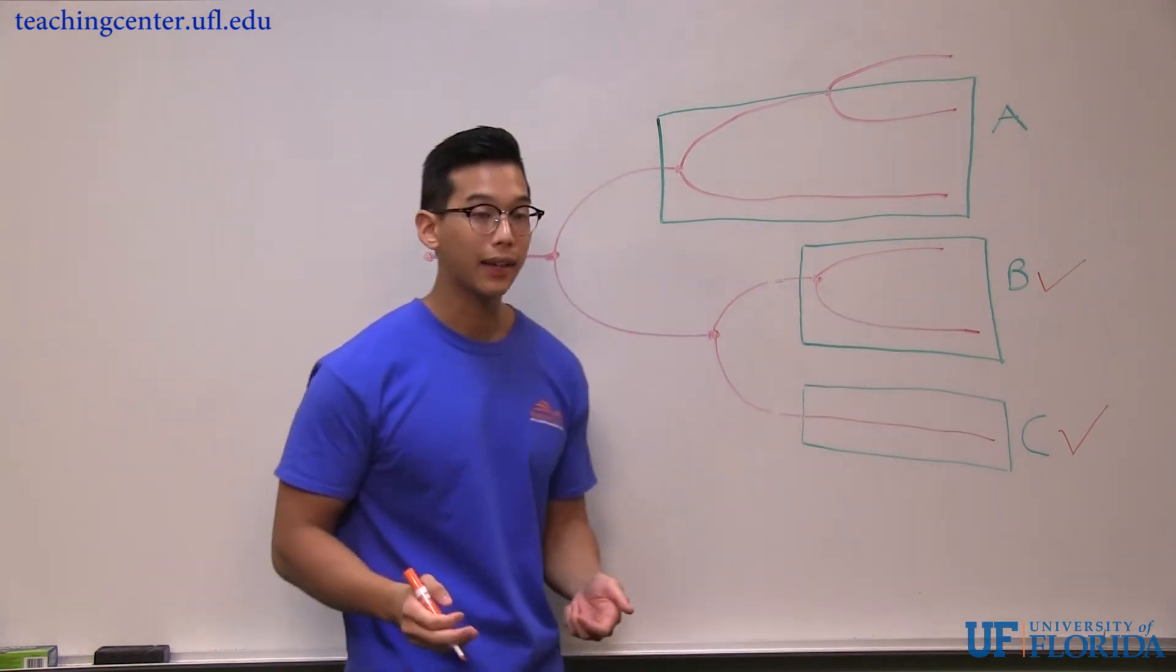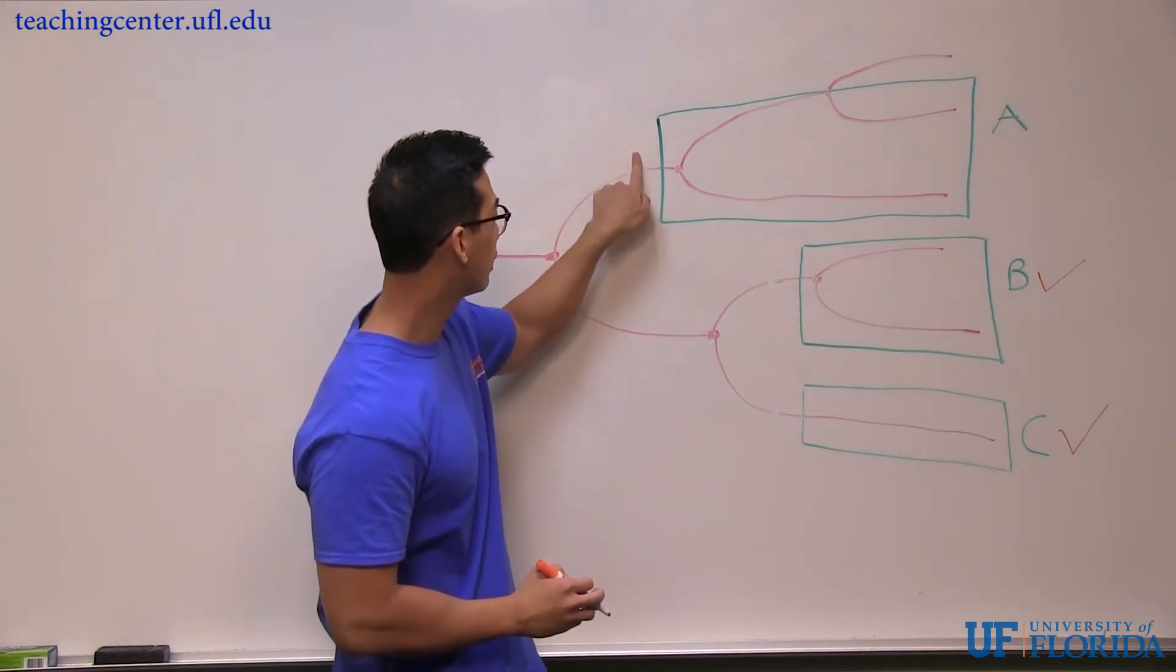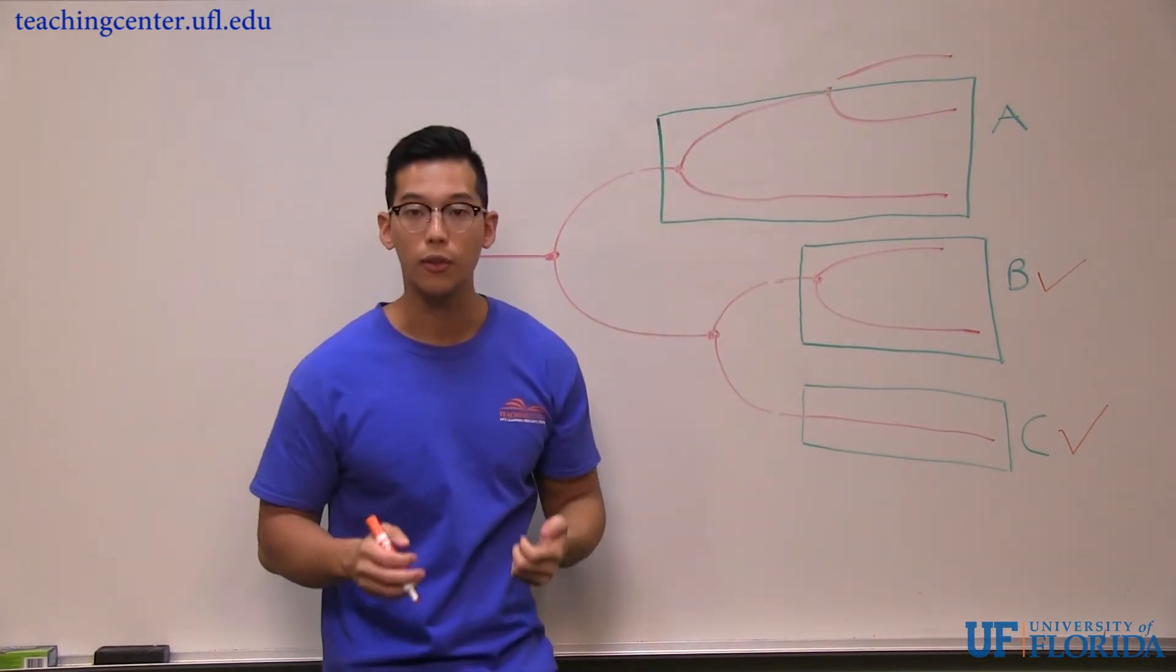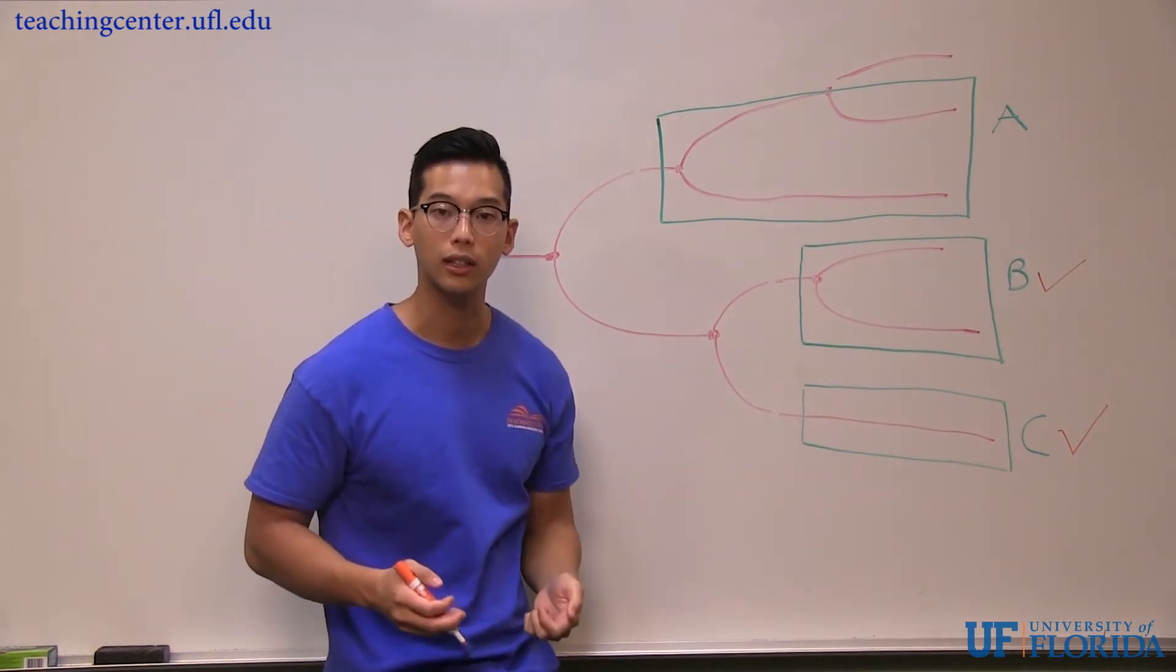Now, for A, we would have to make two incisions, one incision right here and one incision right here, to remove group A from the rest of the phylogenetic tree. So that means A is not a clade.